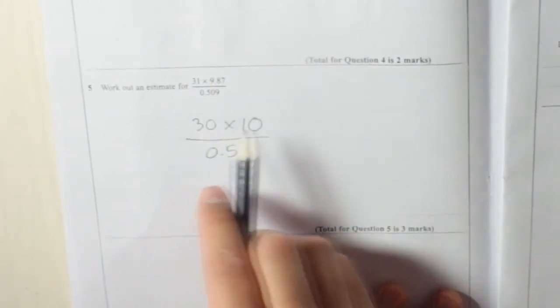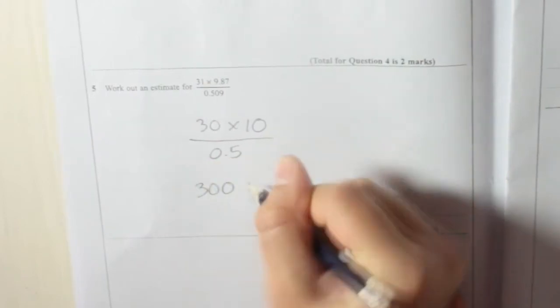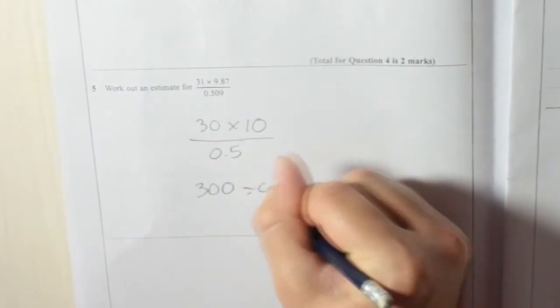So, that means you're doing 30 times 10, that's 300, divided by 0.5.